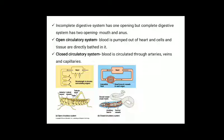When we deal with the circulatory system, in open circulatory system the blood is pumped out of the heart and cells and tissues are directly bathed in it. Whereas in the case of closed circulatory system, blood is circulated through arteries, veins and capillaries.